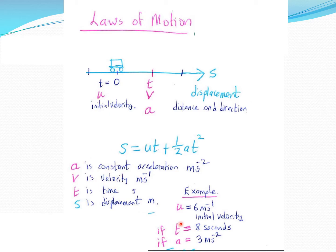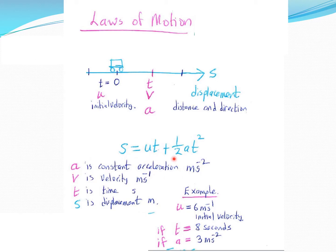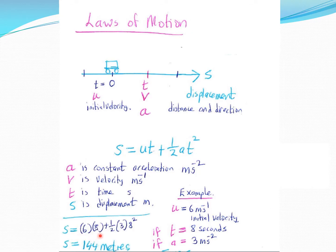Let's look at an example. If the initial velocity is 6 m/s, the journey takes 8 seconds, and acceleration is 3 m/s², the final velocity is v = u + at = 6 + (3×8) = 6 + 24 = 30 m/s. The displacement after 8 seconds is s = ut + ½at² = (6×8) + ½(3)(8²) = 48 + 96 = 144 meters.